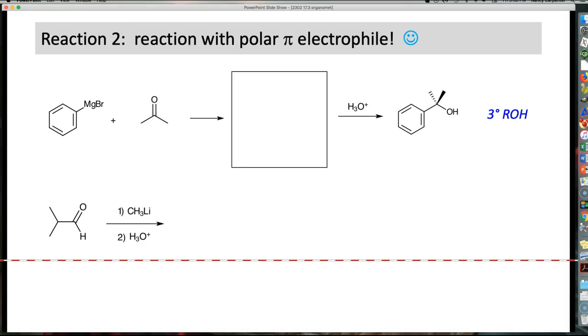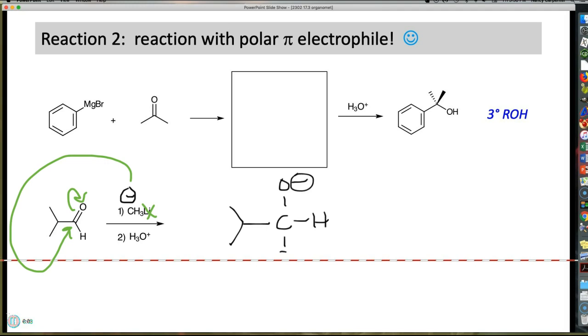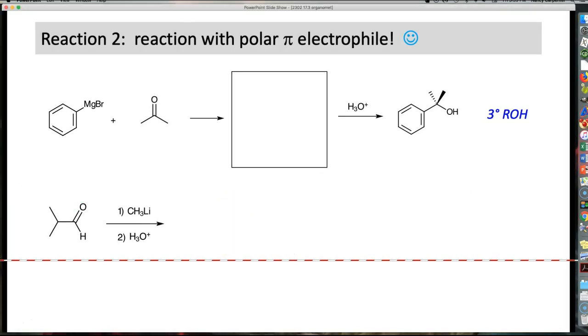Another example. What if it's an alkyllithium, like this one, methyllithium? How does the reaction change? Well, really it doesn't. For all intents and purposes, it's the same thing. It's definitely the same electron movement. Nucleophile attacks electrophile. Now I've added a methyl group here. So this was my aldehyde, and when I protonate this upon workup, I have this guy. There's the H from the aldehyde. A secondary alcohol.